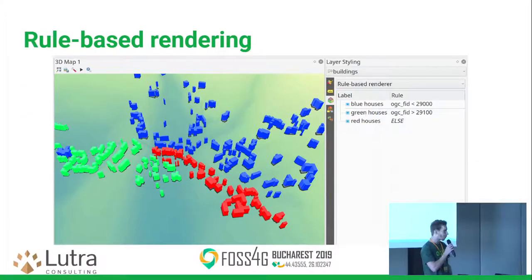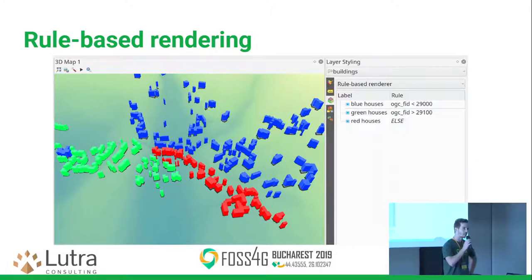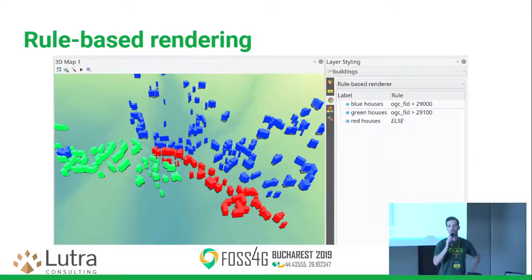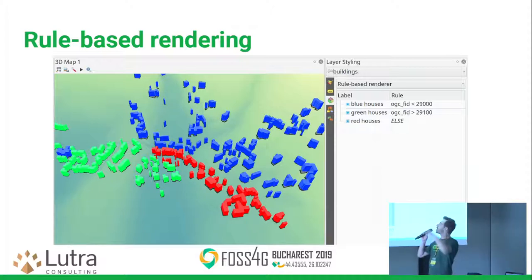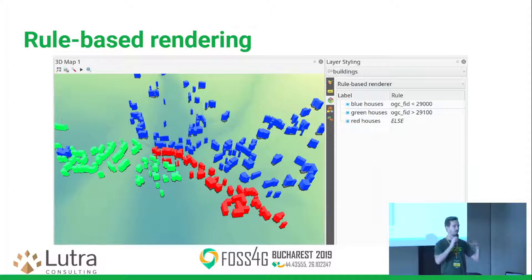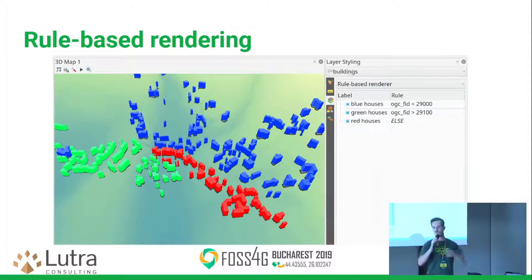Another thing for styling is that we also support rule-based rendering. So it's not that you use just a single symbol for all features within a layer — you can define a bunch of rules, and every rule can have different colors or even different types of symbols.